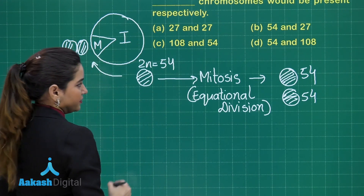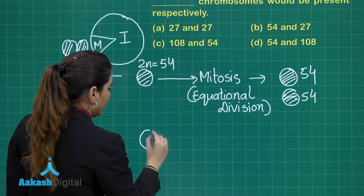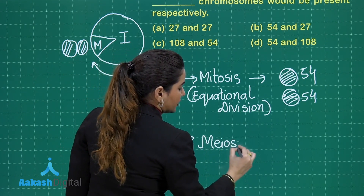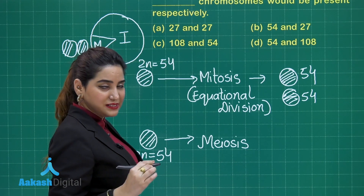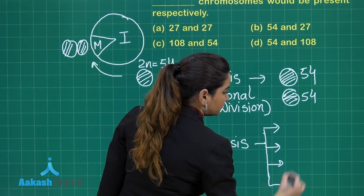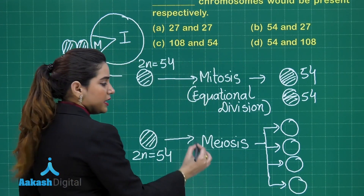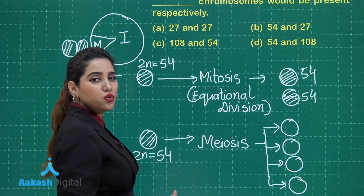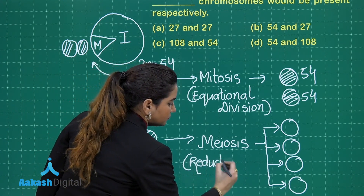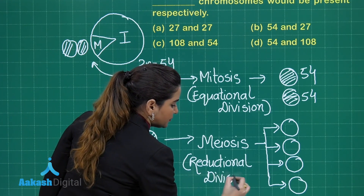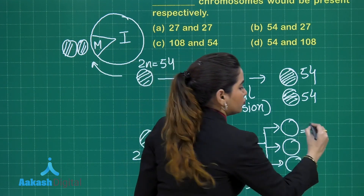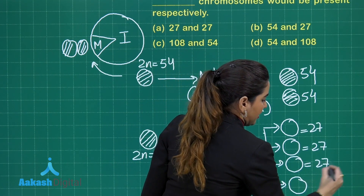If this organism undergoes meiosis, starting from 2N = 54, meiosis has 2 stages — meiosis 1 and meiosis 2 — and 4 gametes are formed. After meiosis, the number of chromosomes reduces to half, which is why meiosis is known as reductional division. So in all 4 haploid cells, the chromosome number will be 27 each.